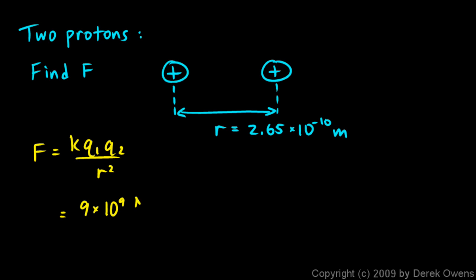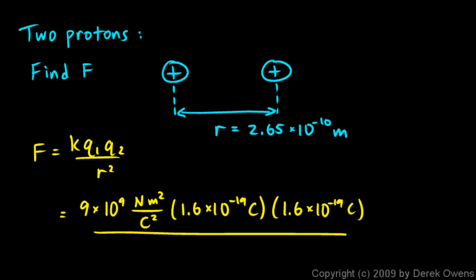And K is 9 times 10 to the 9th newton meters squared per coulomb squared. And the charge on one proton and on the other is the elementary charge. It's 1.6 times 10 to the negative 19th coulombs. And you could write it out twice, 1.6 times 10 to the negative 19th coulombs, because that's q1 and q2. Or you could just write it once and write that number squared. Same thing. But it's all that divided by this distance squared. So we divide by 2.65 times 10 to the negative 10th meters squared.